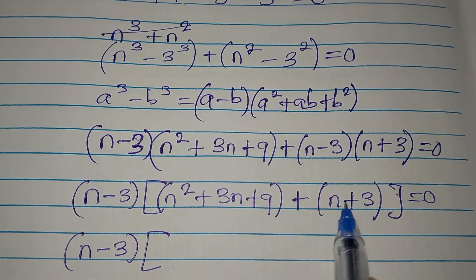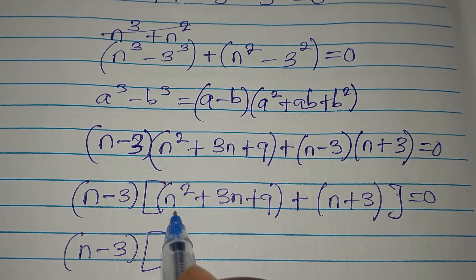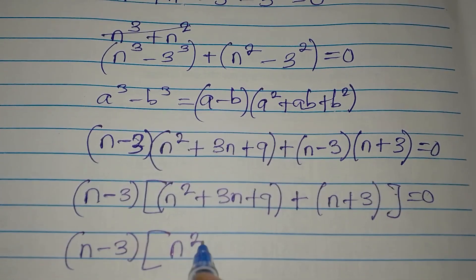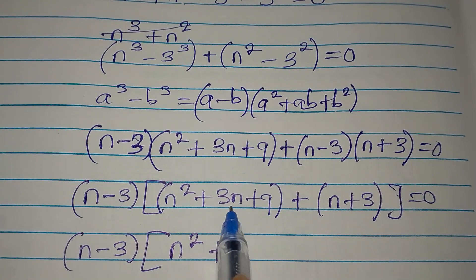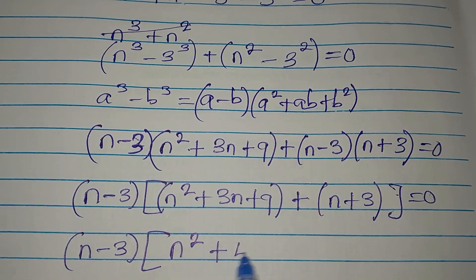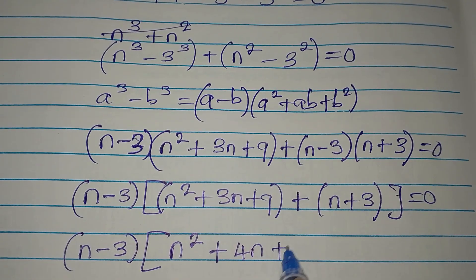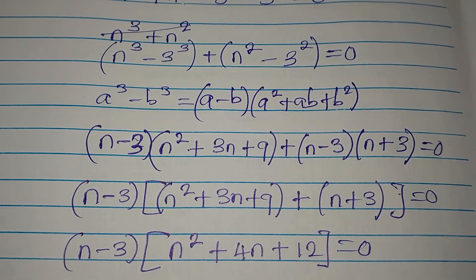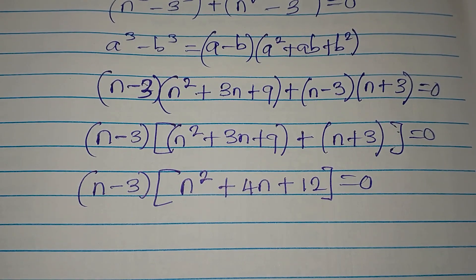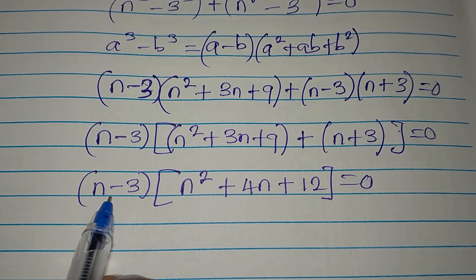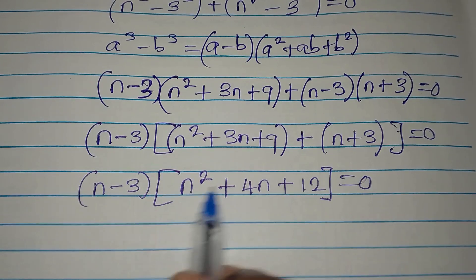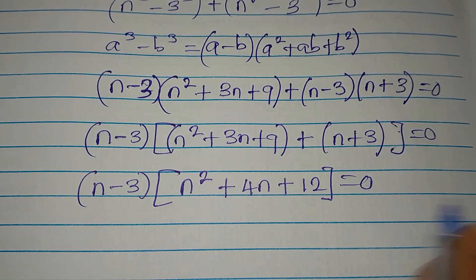To continue, we need to open the bracket. We have n minus 3 as the common factor. Opening the bracket: n squared does not have a partner so it comes down, then 3n plus n gives us 4n, then 9 plus 3 gives 12. So we have n minus 3 times n squared plus 4n plus 12 equals zero.